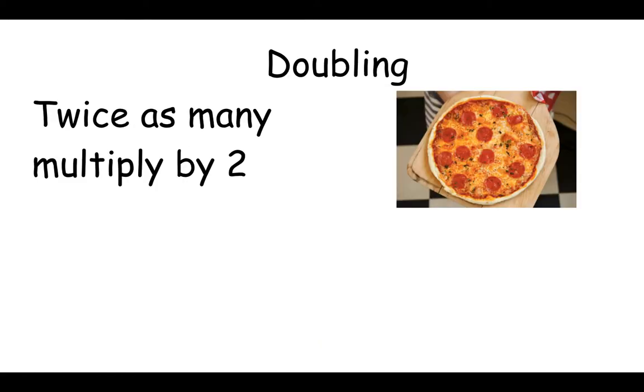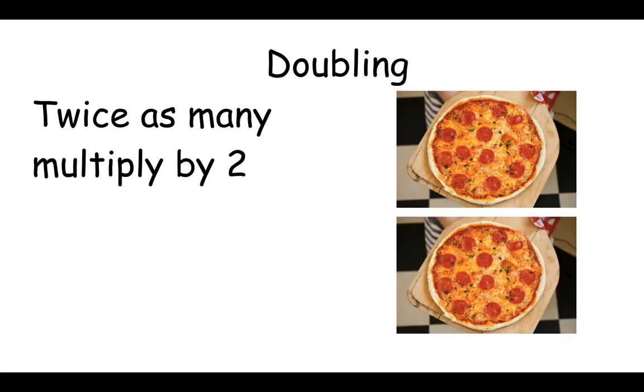When we double, we're doing the opposite. Instead of dividing by two, we're multiplying by two. And we might often read the phrase twice as many. This means double. On the screen, I've got one pizza. If I wanted to double it, I'd multiply it by two. One times two is two. So I would have two pizzas.